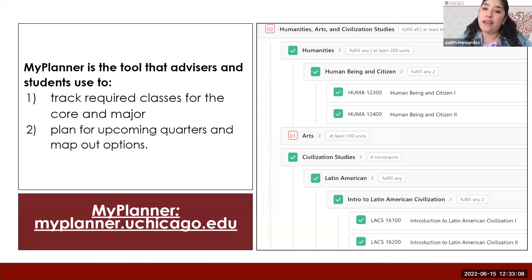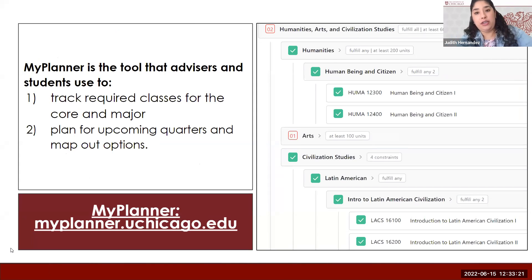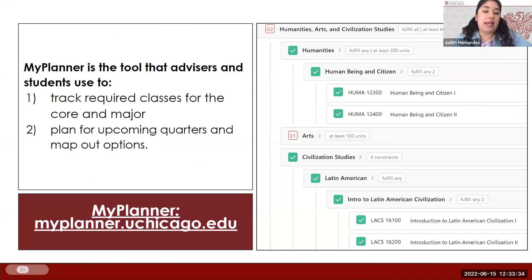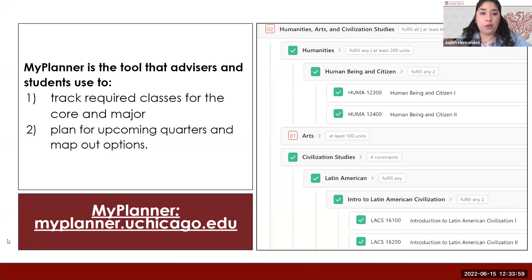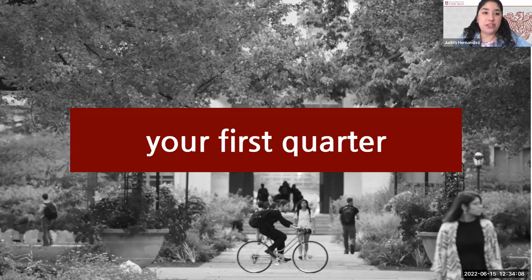We also have My Planner. You don't have access to this yet, but in the upcoming weeks, you'll be able to access My Planner on your Chicago portal. My Planner is a technology tool that shows you in green what you're fulfilling and in red what you still need. It's very useful for both you as a student and for advisors — this is how we keep track of your progress and create consistency. Toward the end of your fourth year when you're ready to graduate, we use this for a degree audit to make sure all your classes are complete and that you are meeting the 4,200 units. You can play around with it to plan out your four years of study.